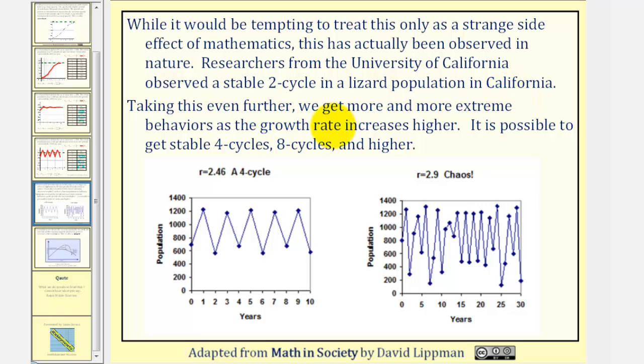Taking this even further, we can get more and more extreme behaviors as the growth rate increases higher. It is possible to get stable four-cycle and eight-cycles and higher. Here's an example of a four-cycle. And here's an example where there seems to be no pattern between the higher populations and lower populations.